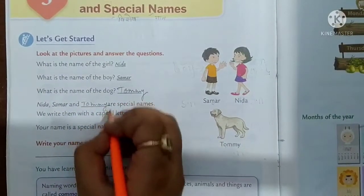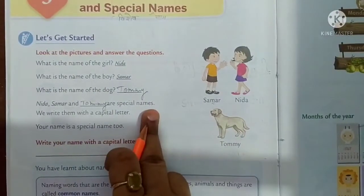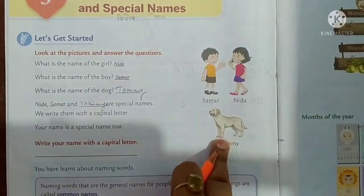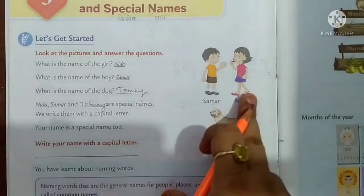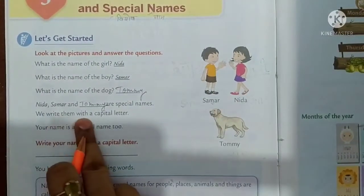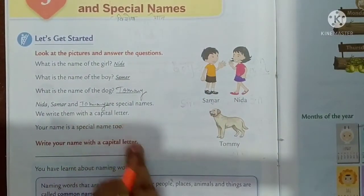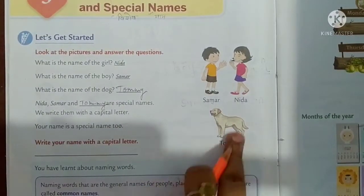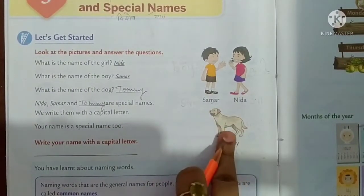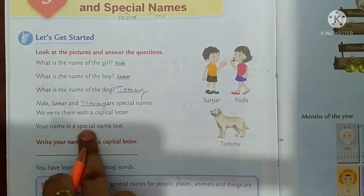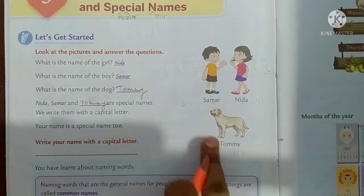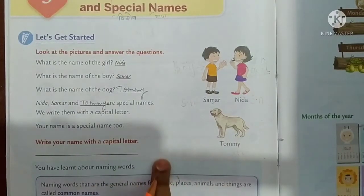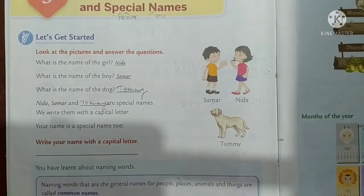Nida, Summer and Tommy are special names. Tommy is an animal, Summer is a boy, Nida is a girl. We write them with a capital letter. The special names always start with a capital letter. Your name is a special name too.